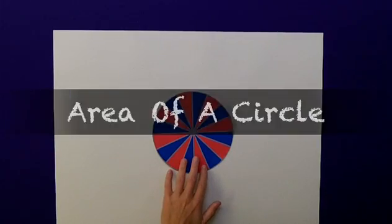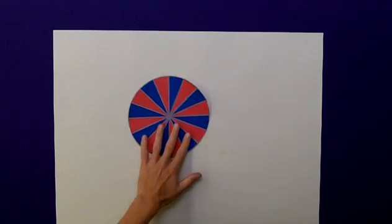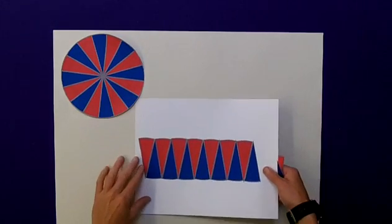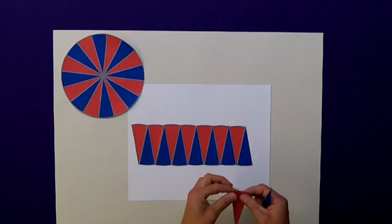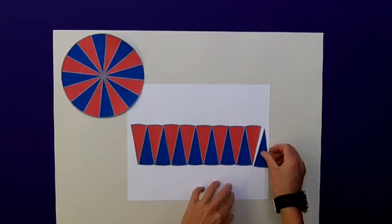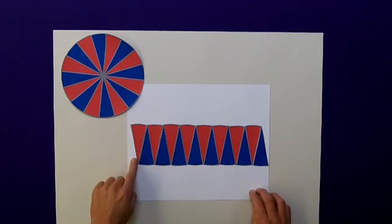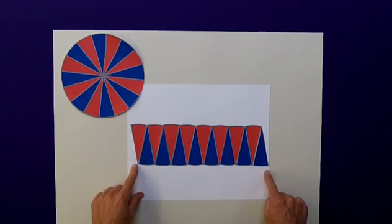To find the area of any circle, we can divide the circle up into many segments, and then arrange those segments to form a very crude rectangle. I'll just arrange my final two pieces here. And to find the area of any rectangle, we simply multiply the height by its length.